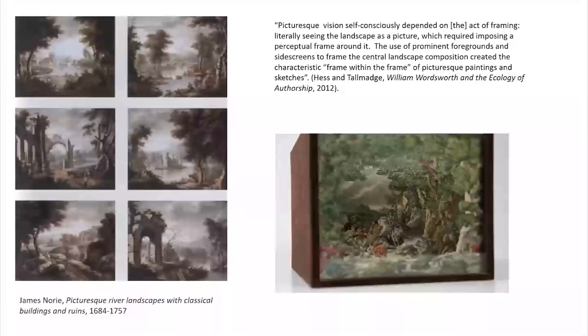Hess and Talamad are theorists who identify the picturesque as a mode of seeing that depended on imposing a perceptual and literal frame around the landscape. This is exemplified in James Norrie's picturesque river landscapes with classical buildings and ruins. The experience of entering the landscape is enhanced by distinct layers of recession into depth and shifts of scale. The teleorama is noticeably reminiscent of Norrie's paintings — you could imagine sectioning off each receding plane of Norrie's compositions and turning this into a cutout. The trees and ruins that flank the composition would become flats, diminishing in scale and saturation as their distance from the viewer increases.